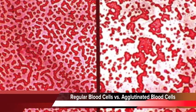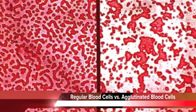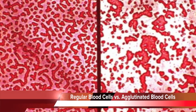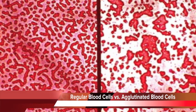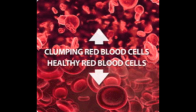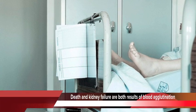Agglutinated blood will not be able to carry oxygen or nutrients to the cells, or carry waste and CO2 away from the cells, and the reaction will cause cracking of red blood cells inside the patient. When a red blood cell cracks open, hemoglobin leaks into the body cavity, causing toxic reactions and usually resulting in fatality.